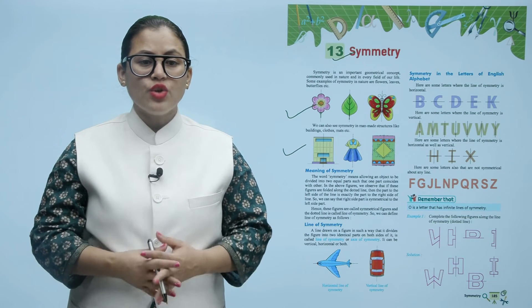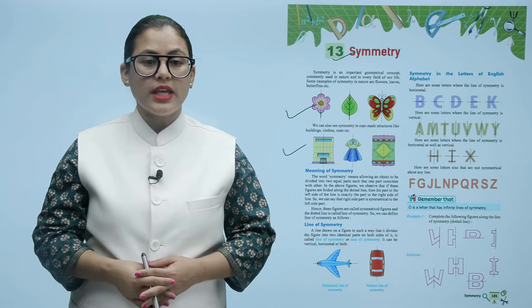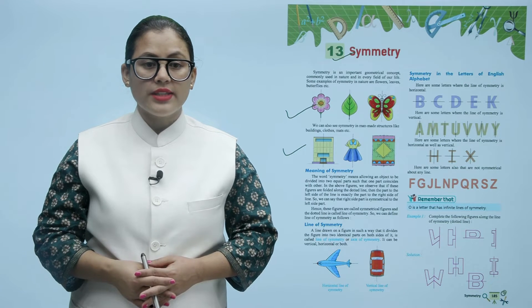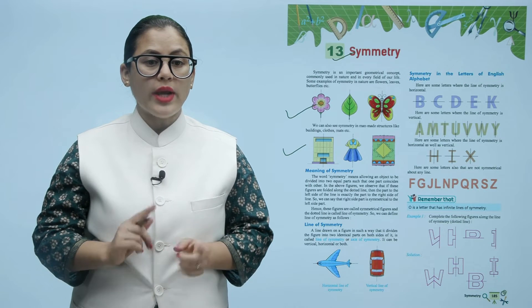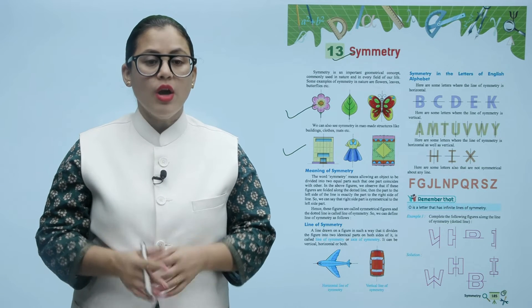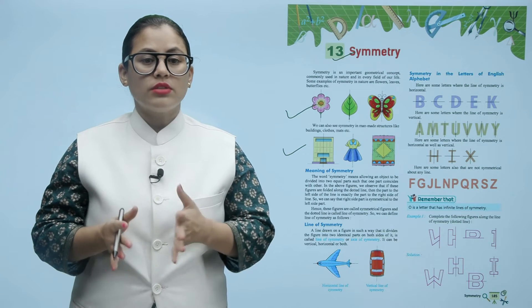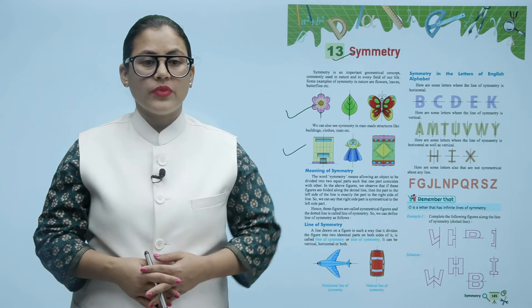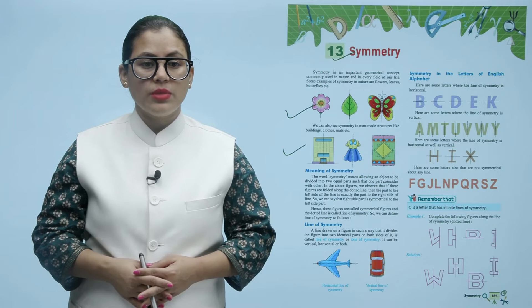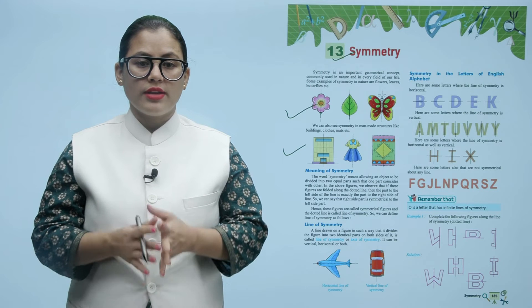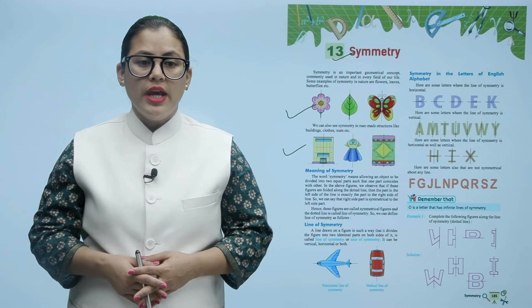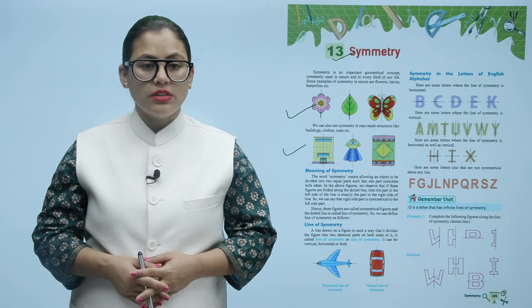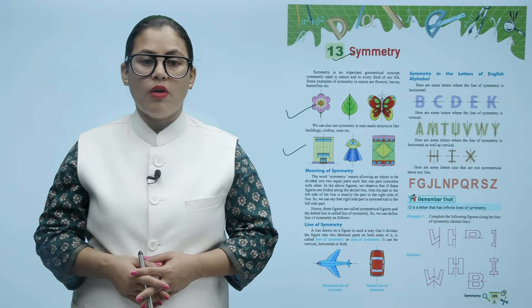A line drawn on a figure in such a way that it divides a figure into two identical parts on both sides of it is called line of symmetry or axis of symmetry. It can be vertical, horizontal, or both.